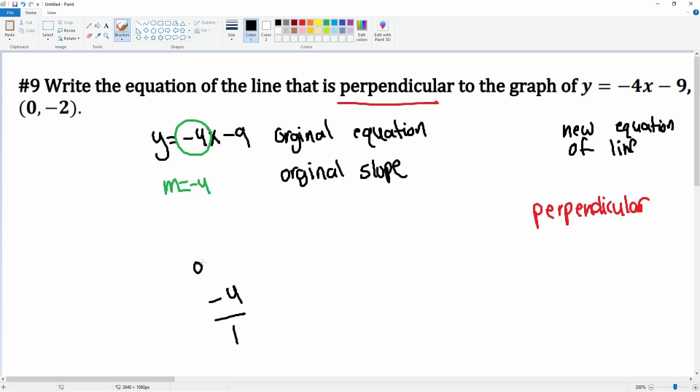So let me show you. If this is negative 4, it's really over 1. This is the original, right? The perpendicular is going to be first reciprocal. So the 4 goes down, negative 4, and the 1 here goes on top. That is the reciprocal.